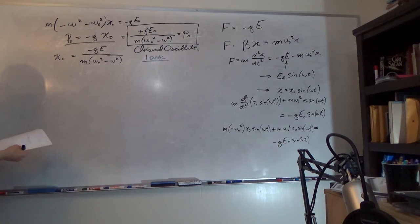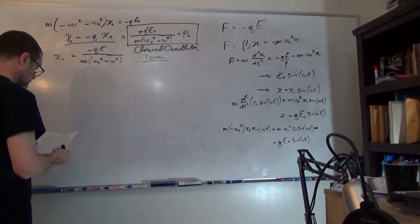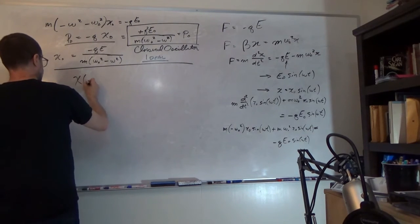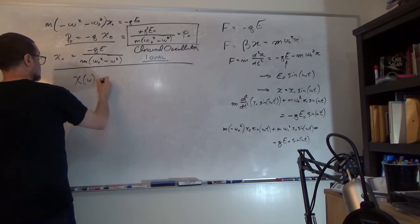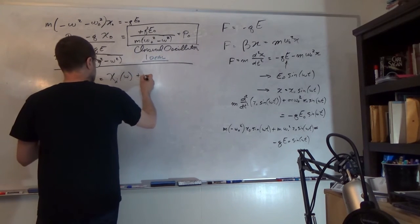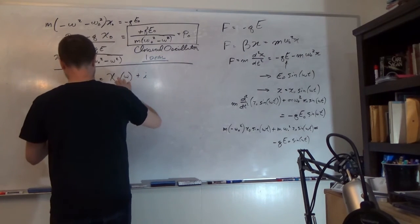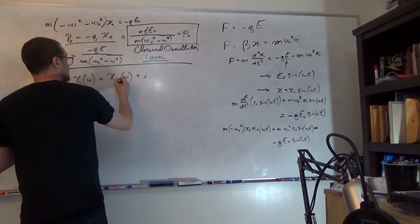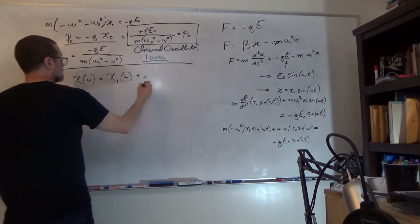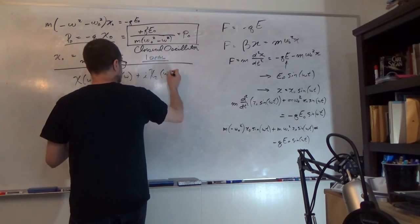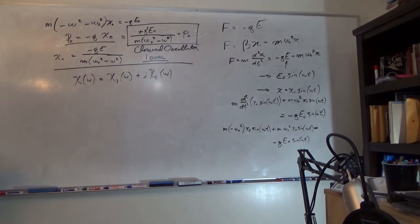When the dielectric susceptibility becomes complex, we get χ(ω) with a real contribution χ₁ and an imaginary contribution χ₂. That is our complex dielectric susceptibility. Getting at these requires using scalar and vector fields and thinking about gauge, so I'll just give you the solution.